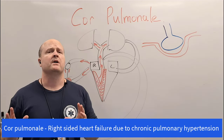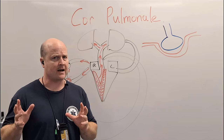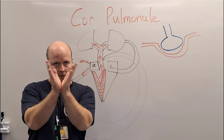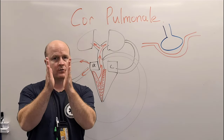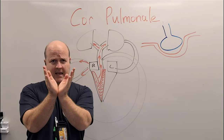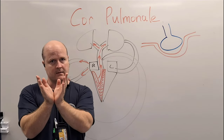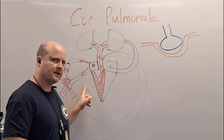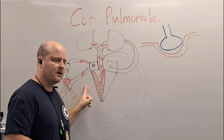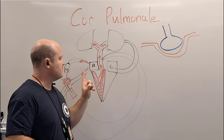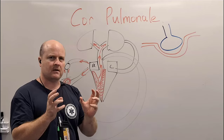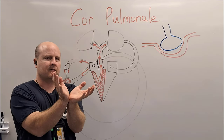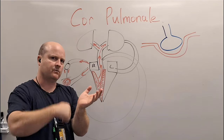Remember, we had two types of right-sided heart failure: either systolic, which was a problem contracting, or diastolic, which is a problem with relaxing and filling. So this would be an example of diastolic heart failure, because the chamber walls get so thick that they can't expand out and relax enough to fill with blood.